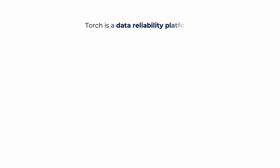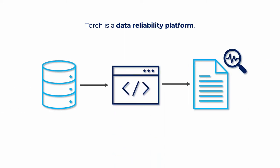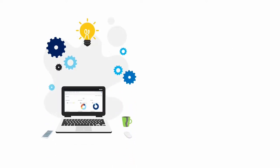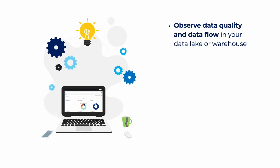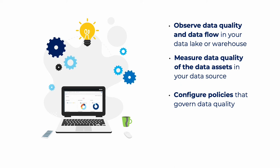Torch is a data reliability platform. What it does is it crawls specified data sources, profiles the data assets, stores the metadata, produces statistical information about the data, and generates lineages. Some of the capabilities of Torch include observing data quality and data flow in your data lake or warehouse, measuring data quality of the data assets within your data source. Torch also helps you configure policies that govern data quality, reconciliation across data sets, and it highlights anomalies and inconsistencies.